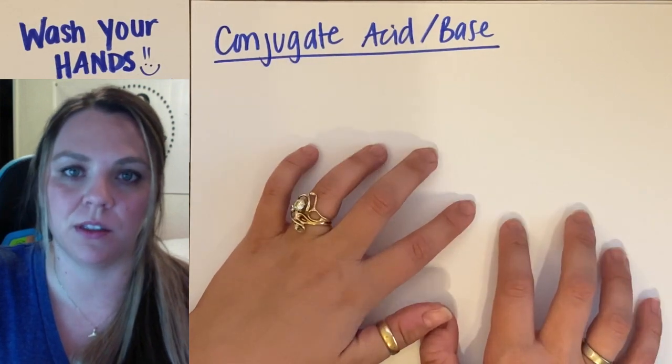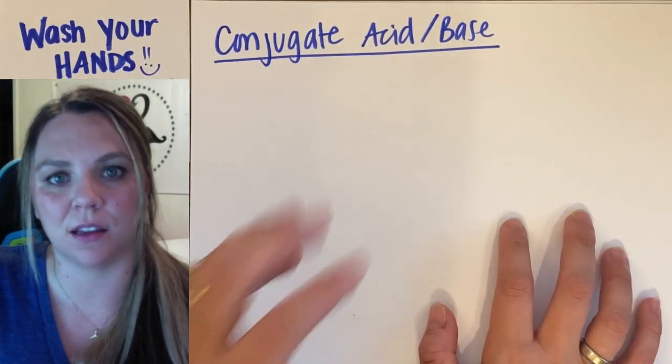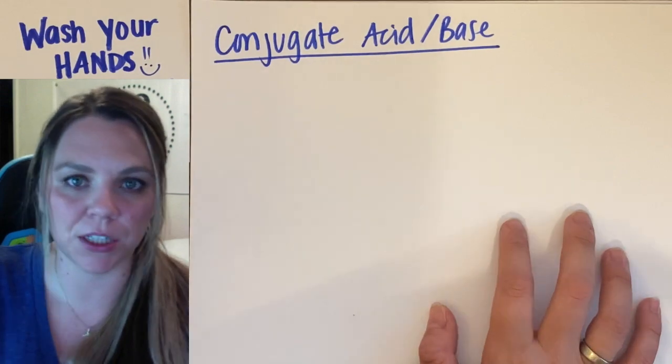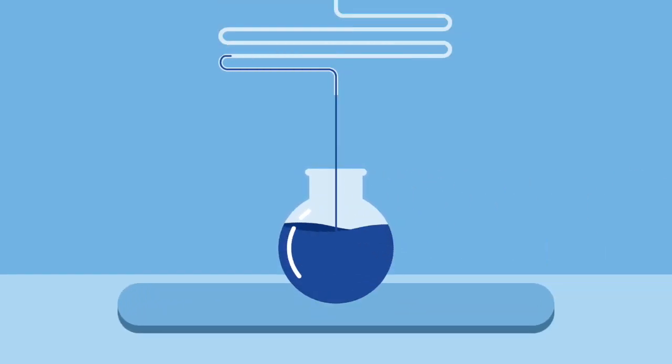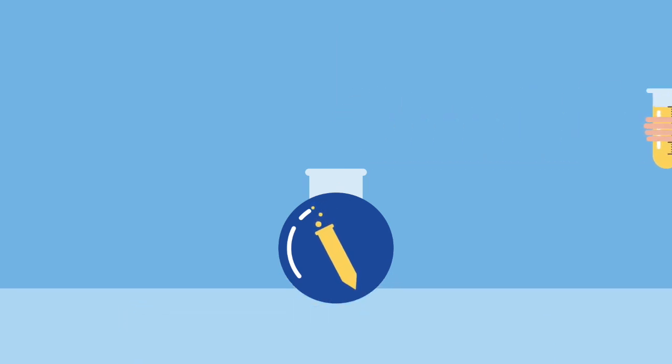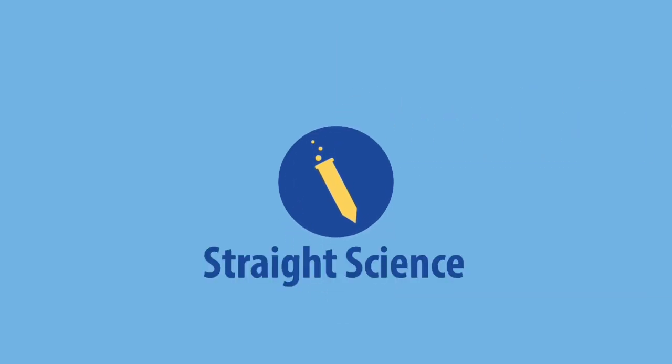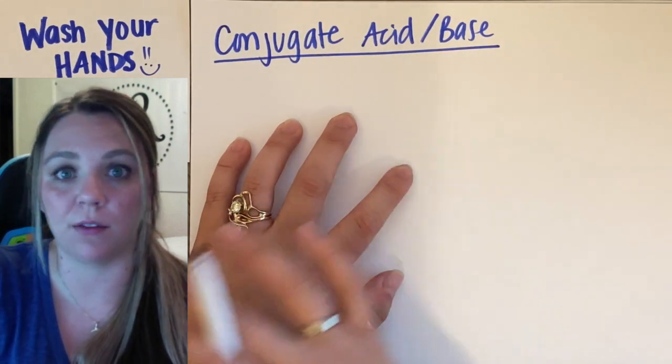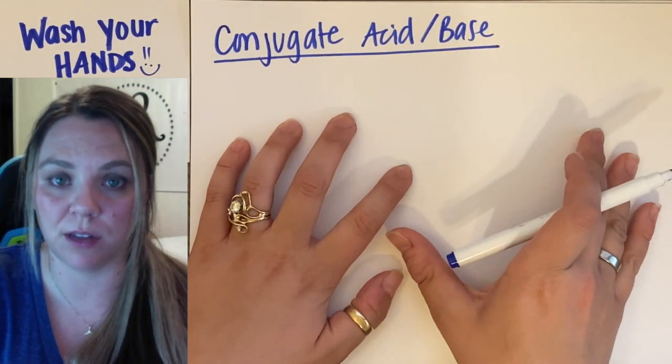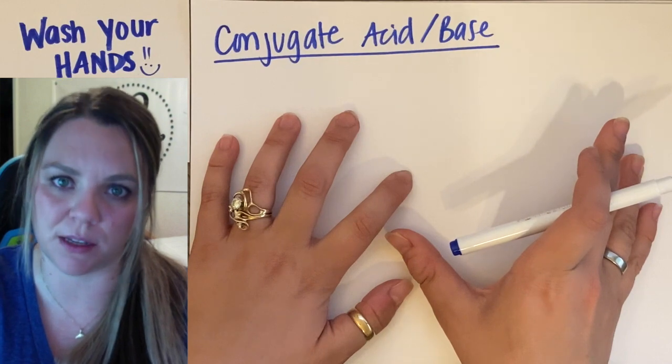In this video, we are going to look at the conjugate acid and the conjugate base of a reaction and how to label them. So what is a conjugate acid and a conjugate base? Every acid-base reaction has a conjugate acid and a conjugate base.